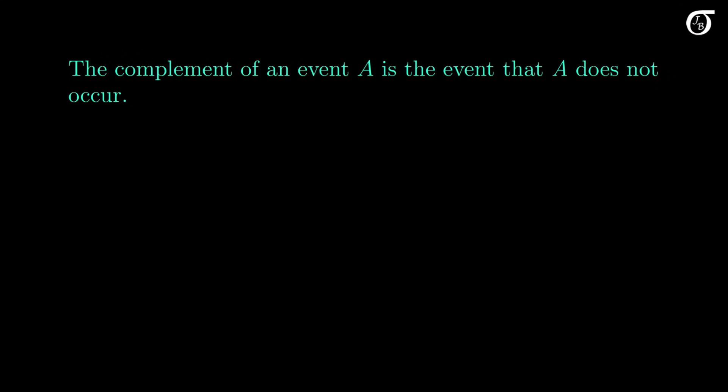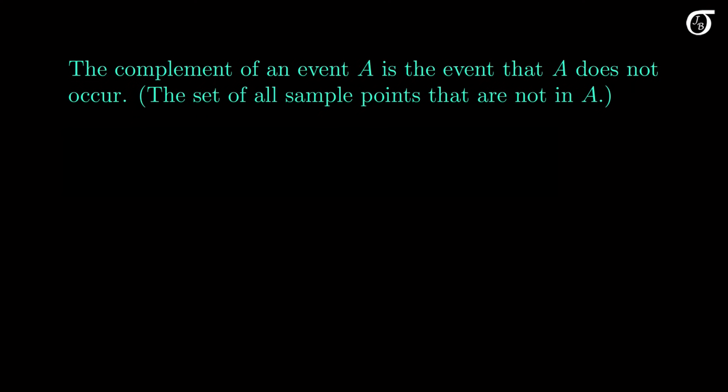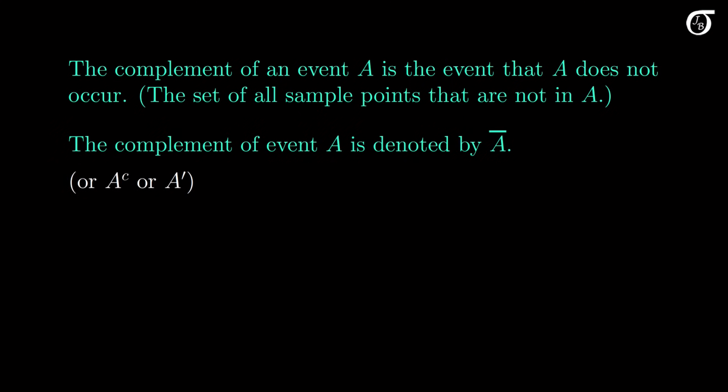The complement of an event A is the event that A does not occur. More formally, A complement is the set of all sample points in the sample space that are not in A. The complement of event A is often denoted by A-bar, but you may also see A with a superscript C, or A prime. All three are very commonly used, so it's not a bad idea to get comfortable with all of them.